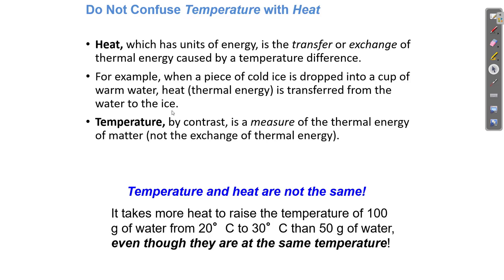Temperature is what you measure when you put a thermometer in a sample and the particles run into it, making it go up — you can measure how fast the particles are going. But if you put something cold into that sample, the particles bump into the cold thing, the cold thing starts moving faster, and the other particles start moving slower. That's called heat — they're exchanging thermal energy. We measure temperature by exchanging heat with the thermometer, the temperature-measuring device.